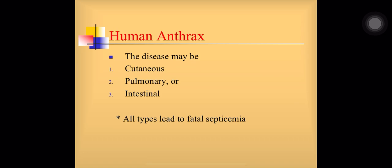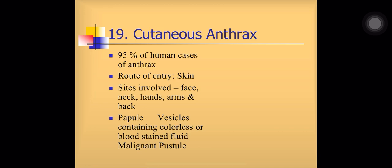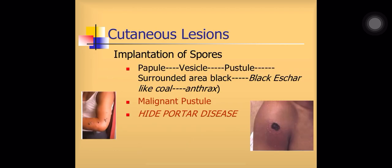Human anthrax can be of three types: cutaneous, pulmonary, or intestinal — and all types can lead to fatal septicemia. Cutaneous anthrax accounts for more than 95% of cases; the route of entry is skin and sites involved are face, neck, hands, arms, and back. There is papule formation converting into a vesicle containing colorless or blood-stained fluid, forming a pustule known as malignant pustule. A black-colored lesion forms as a scar. Cutaneous anthrax is also known as Hyde Potter's disease, as laborers who carry hides of animals on their back may contact it from infected animal hides.